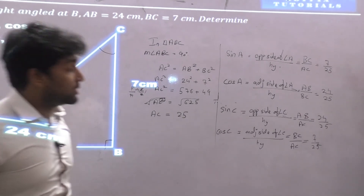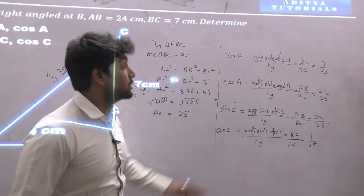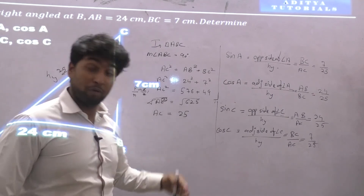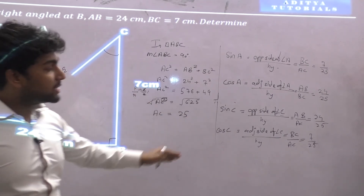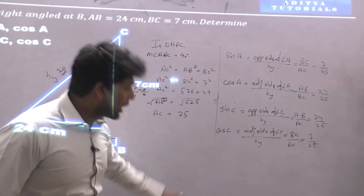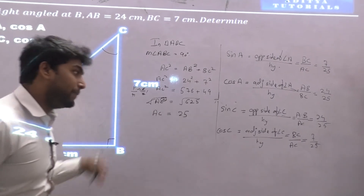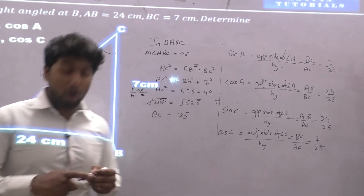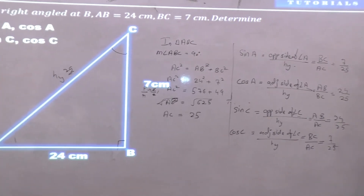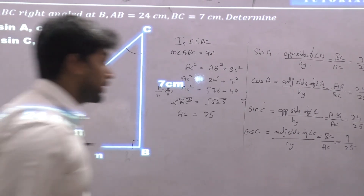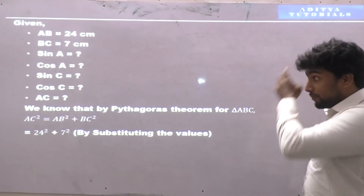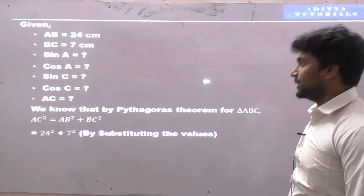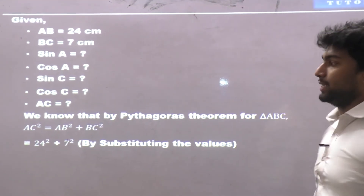Sin C — opposite side of angle C upon hypotenuse — AB upon AC — equals 24 upon 25. Cos C — adjacent side of angle C upon hypotenuse — BC upon AC — equals 7 upon 25. Now let me show you the representation in the box. AB is 24, BC is 7, we need to find sin A, cos A, sin C, cos C, and AC.